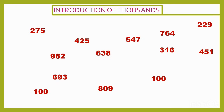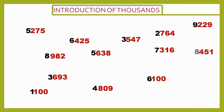Now we shall read numbers in thousands: 1,100; 5,275; 6,425; 8,982; 3,693; 5,638; 3,547; 6,100; 7,316; 2,764; 9,229; 8,451. Now we have learnt how to read numbers in thousands.